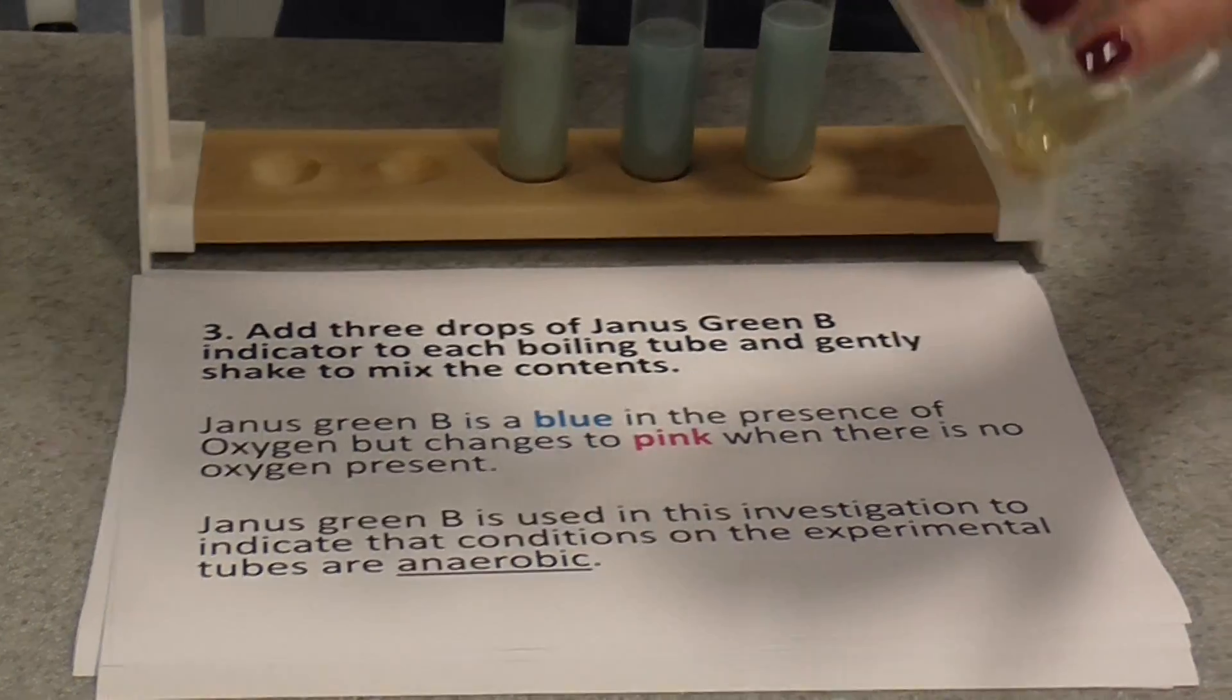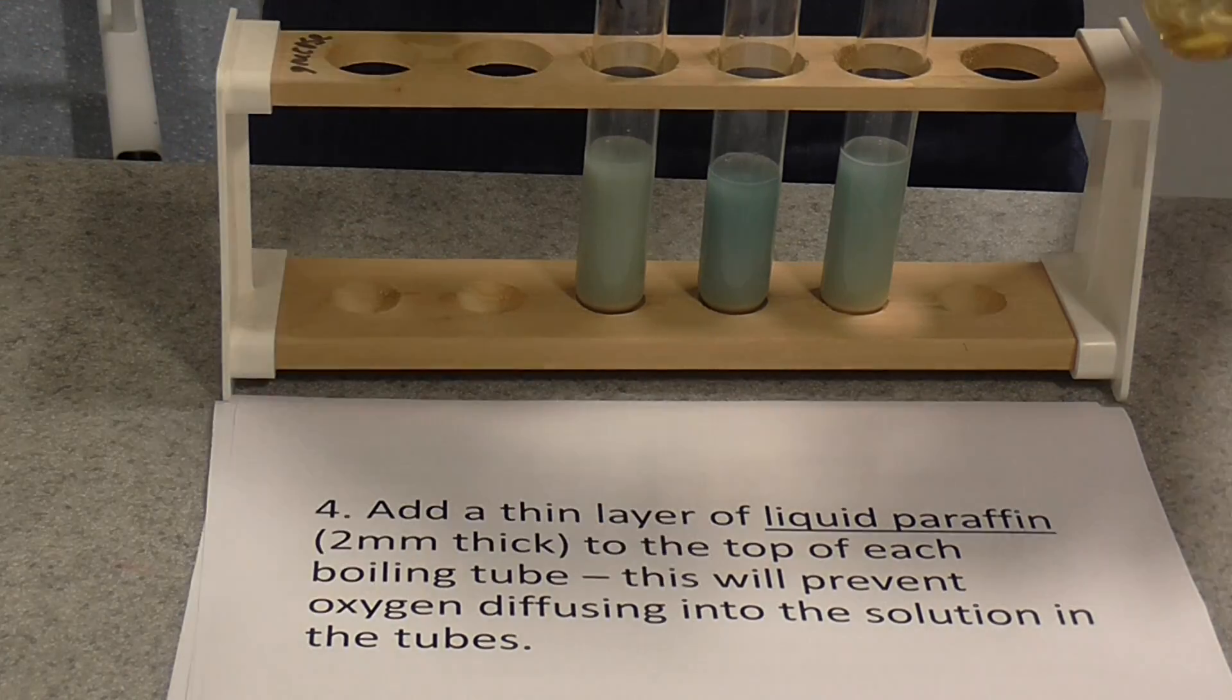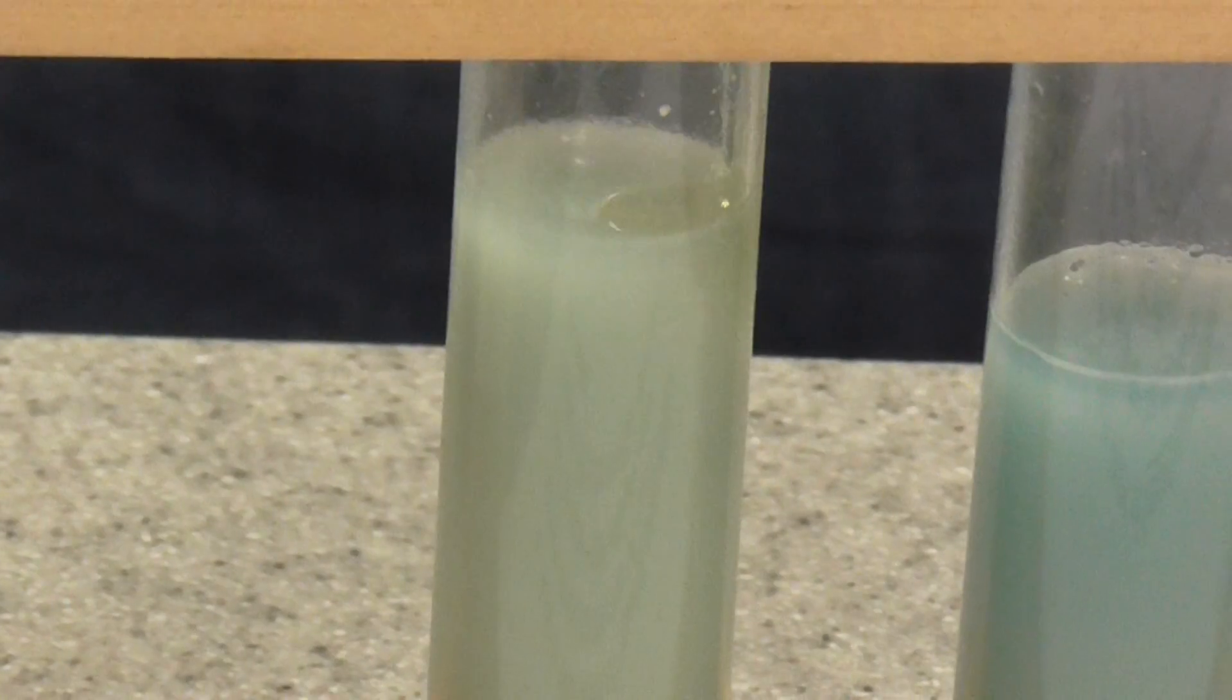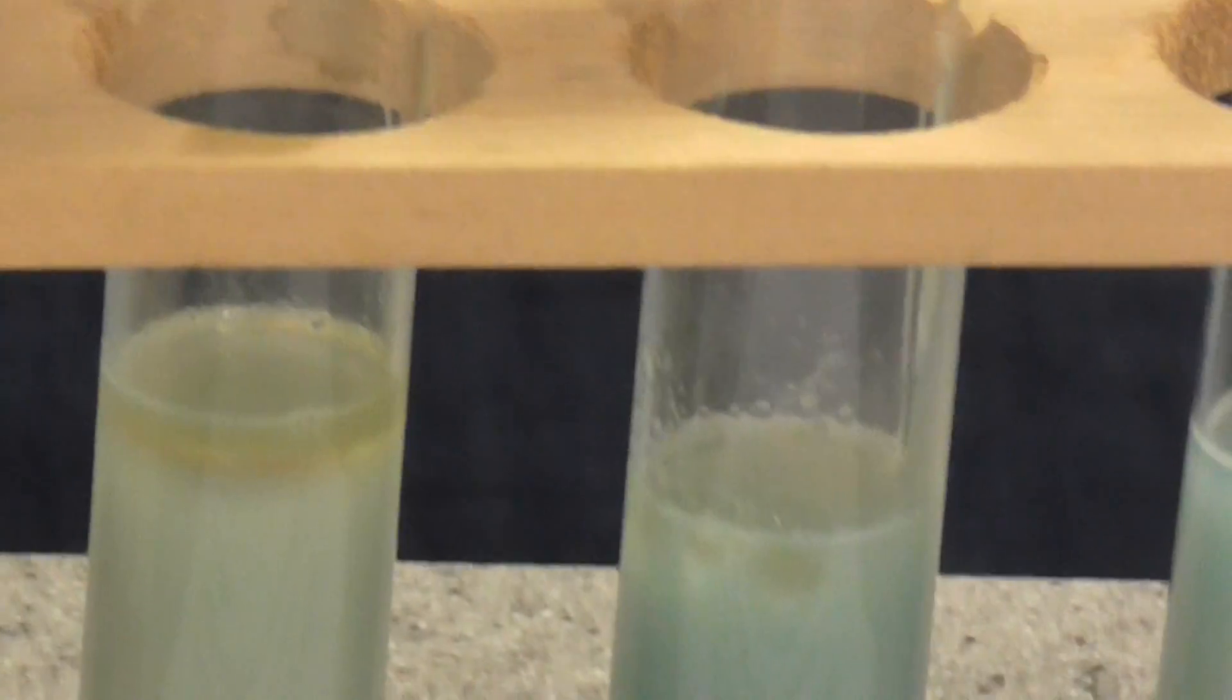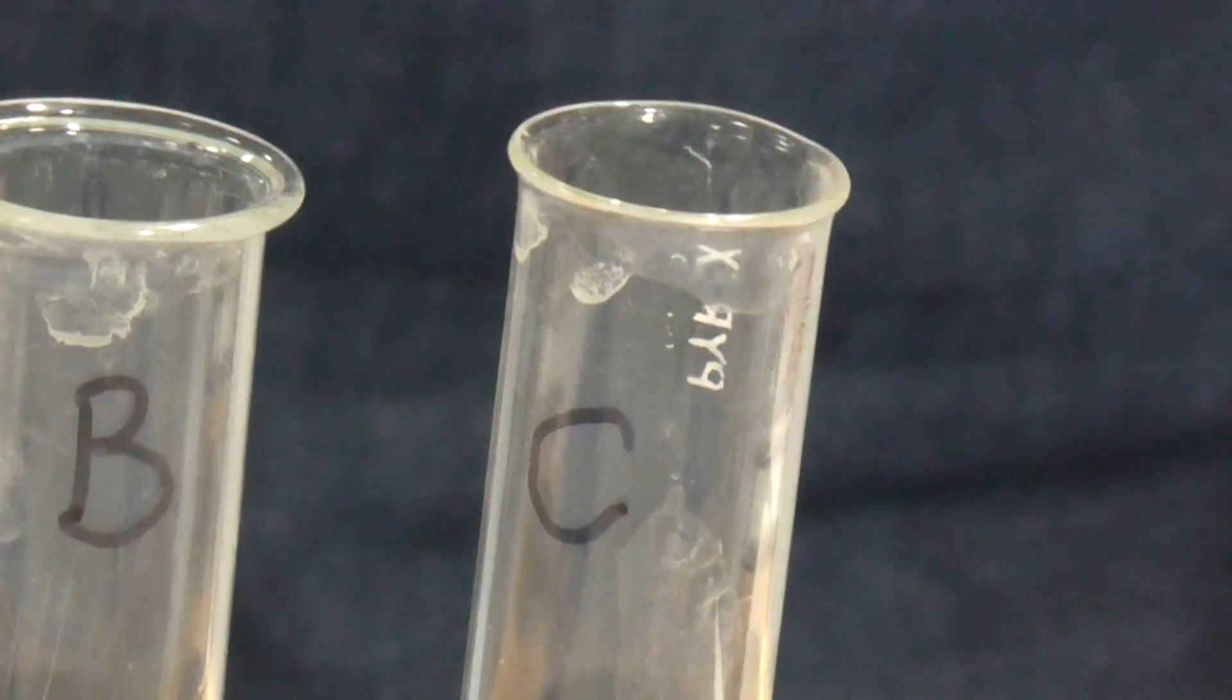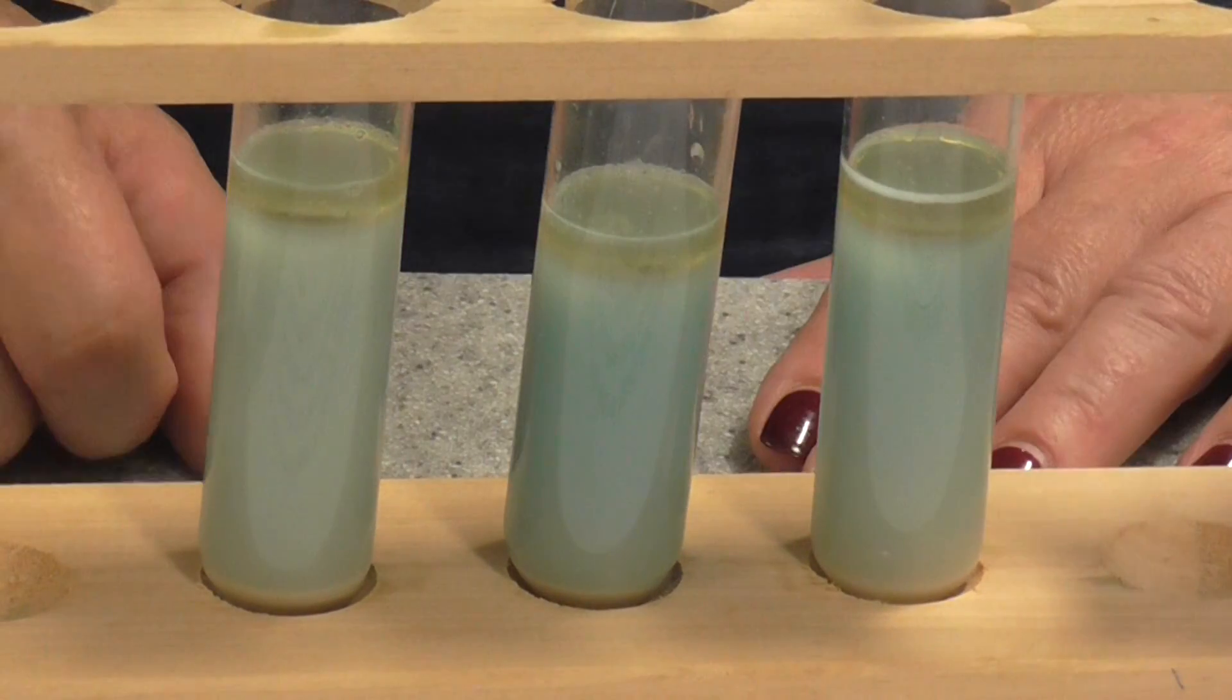So the next thing we have to do is to actually introduce a thin layer of liquid paraffin, or you can use cooking oil, I'm actually using oil today, at least two millimeters thick, to the top of each of your boiling tubes. So again, a syringe is a good way of doing this, or you can use a dropper. So just gently sort of pour it down the edge of the tubes there, until you get a layer completely covering the surface, and it should be a few millimeters thick. Now the purpose of the liquid paraffin or oil is to actually prevent oxygen from diffusing in there from the atmosphere. We want conditions in those tubes to become anaerobic.